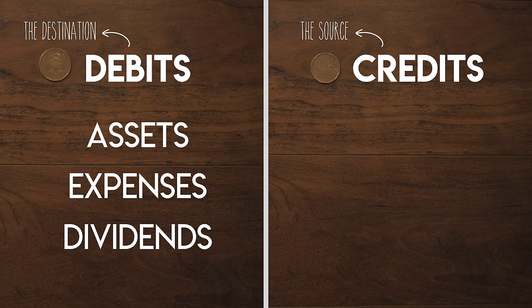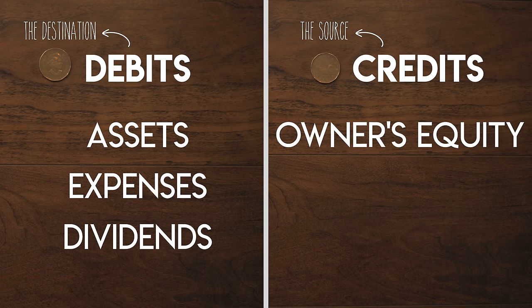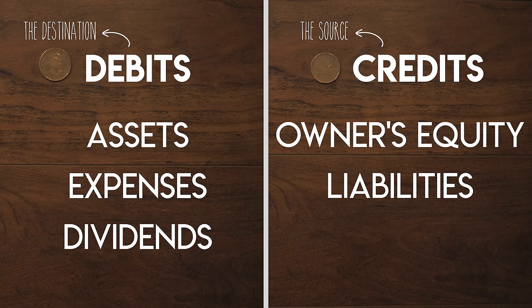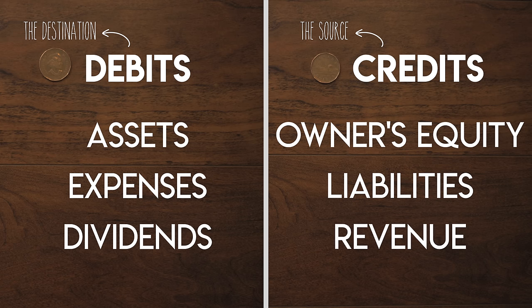On the other hand, sources that economic benefit can flow from include owner's equity — where a business's owners give their cash to the business — liabilities such as amounts owed to a bank in exchange for a loan or to suppliers for providing a good or service, and revenue.